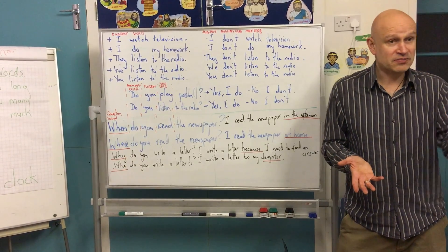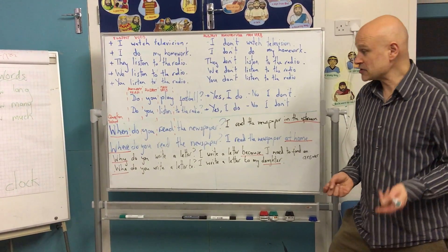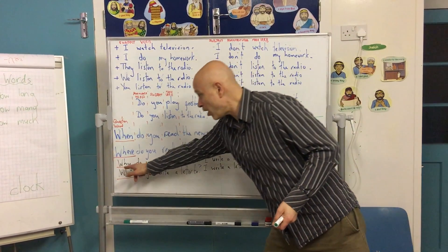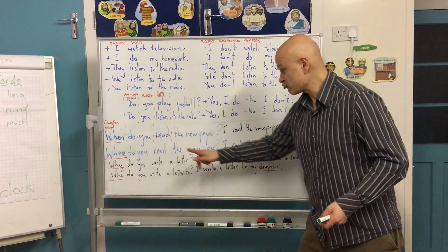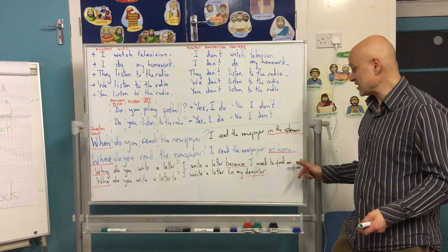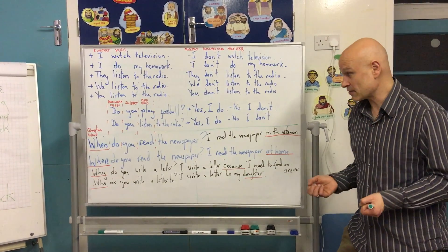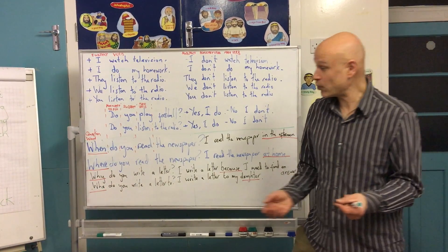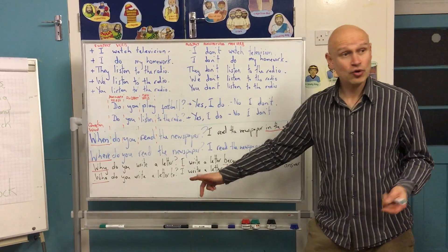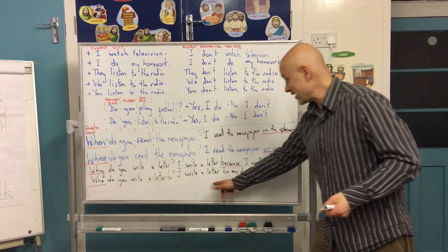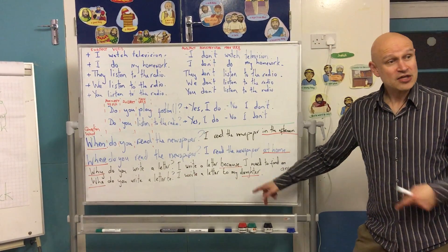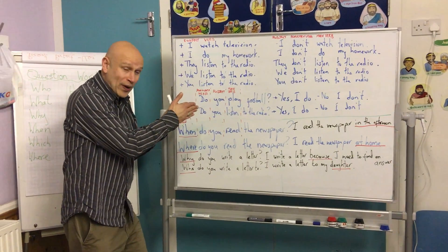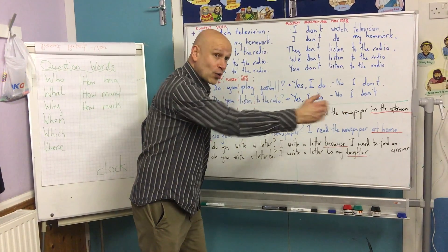And then we asked another question. Somebody said, 'I write a letter.' And somebody said, 'Why do you write a letter?' Why? Because 'I write a letter because I need to find an answer.' And when somebody said 'I write a letter,' they also said, 'Who do you write a letter to?' Person. 'I write a letter to my daughter.' So we found out lots of ways — positive, negative, short questions, and long questions. Long questions use the question word.